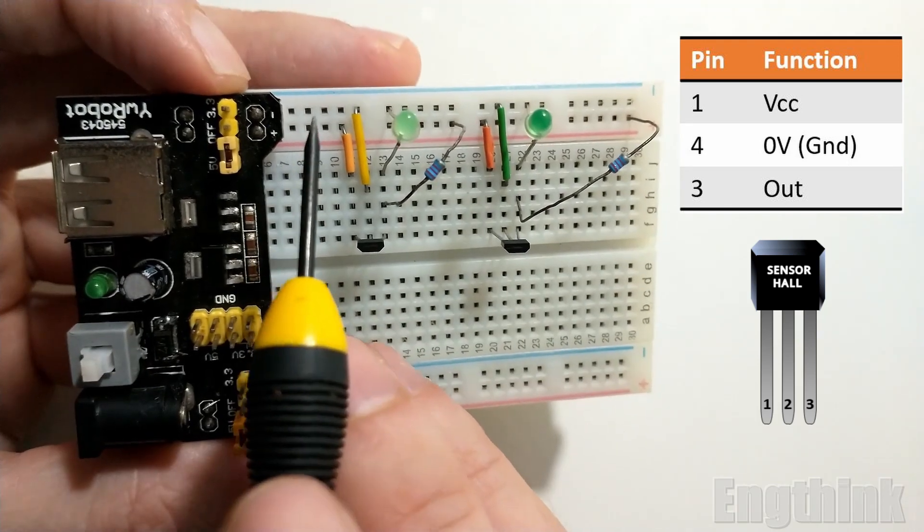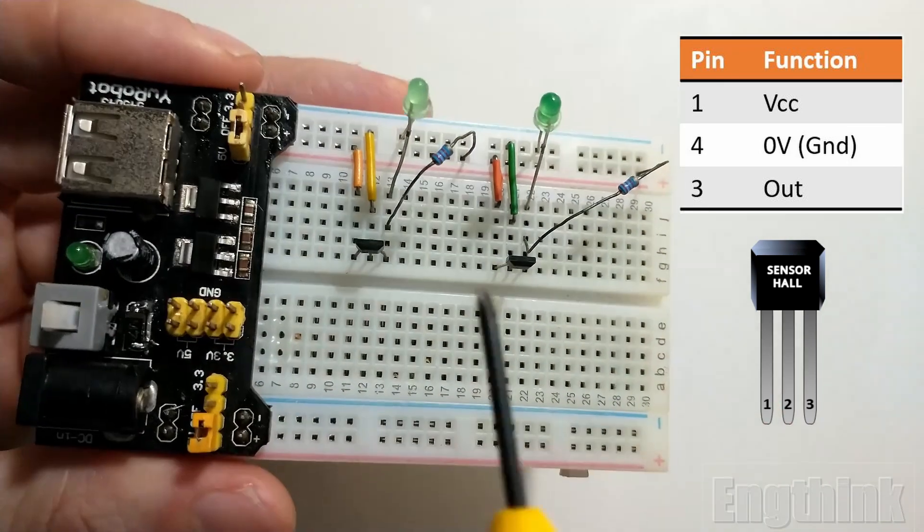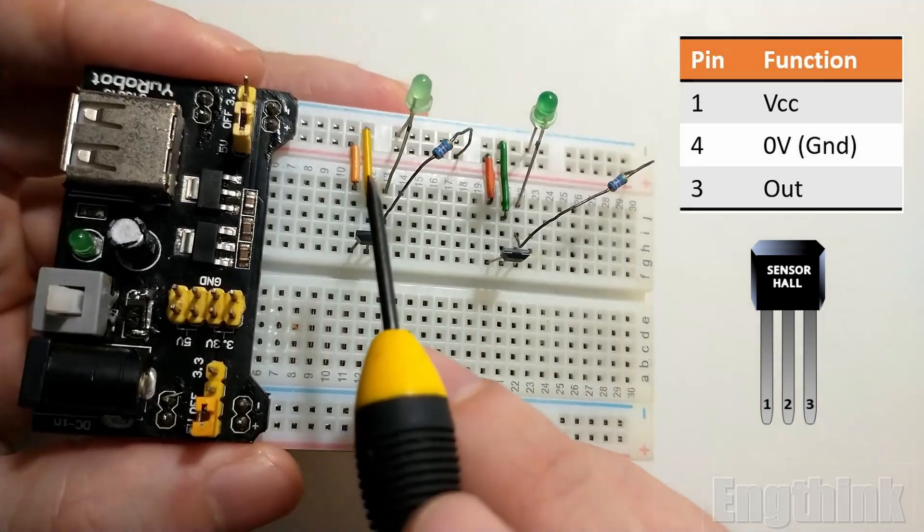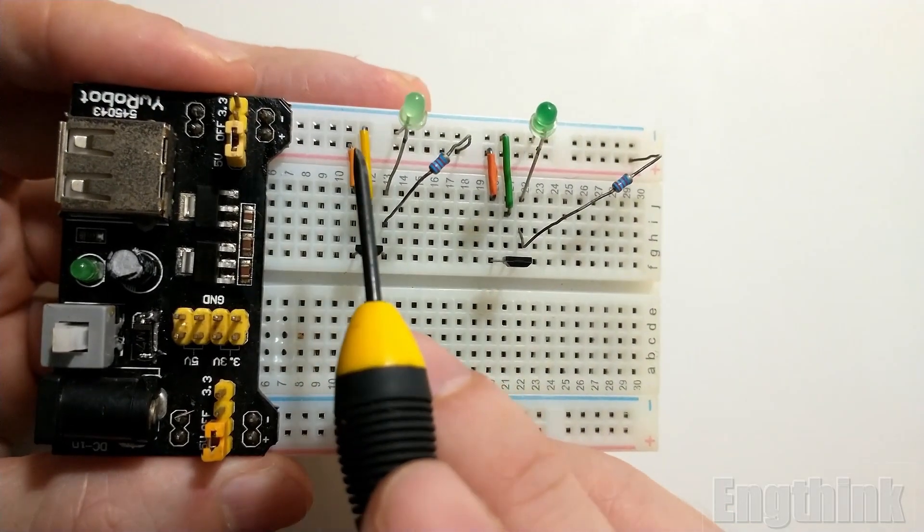Finally, I have the third pin, pin number 3, and this one is the output of the Hall effect sensor.